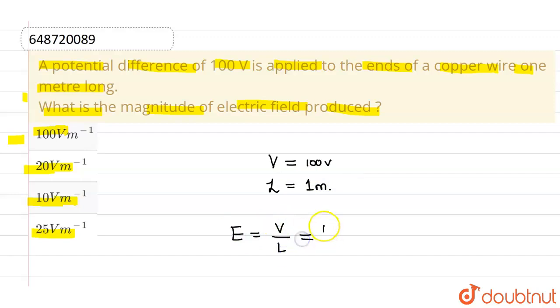So this will be 100 divided by 1, which can be written as 100 volt per meter. This is the value of electric field produced. From these four options, the correct option is option 1, and rest all options are incorrect. I hope you understood, thank you.